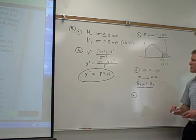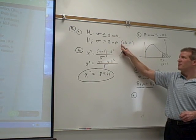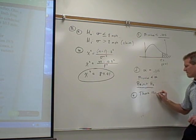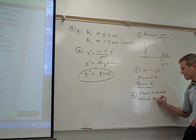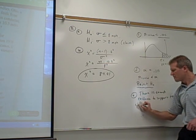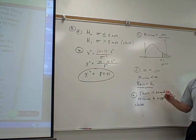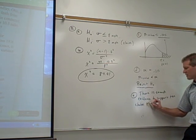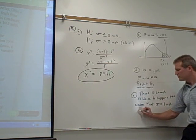Step E would be to summarize the claim. So if we're rejecting the null, that means we think it's false. That means we think the claim must be true. So we're going to say there is enough evidence to support the claim that the standard deviation is greater than 8 miles per hour, or that 8 miles per hour is too low.